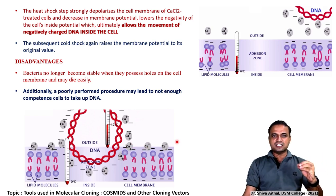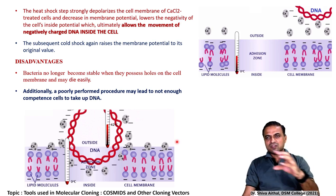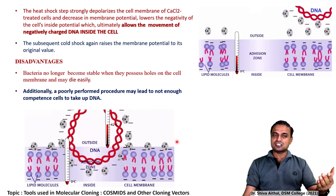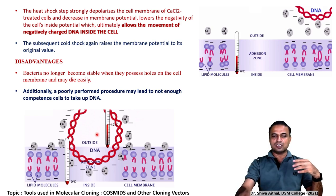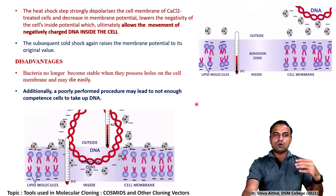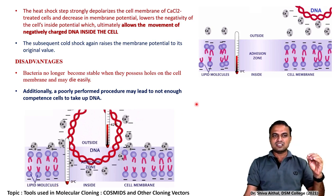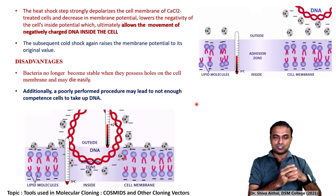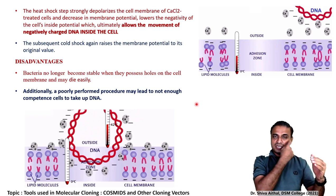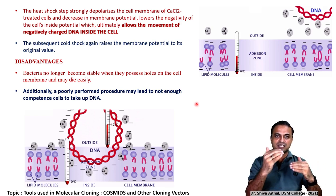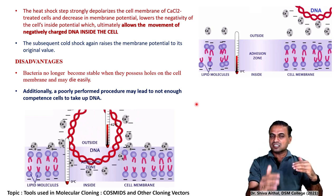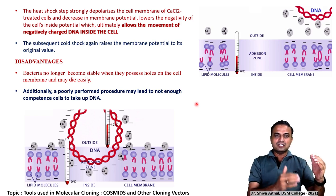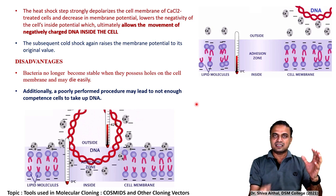Once the DNA is attached and movement starts, there is a subsequent cold shock — suddenly the temperature is brought down to 0 degrees centigrade. When the temperature is brought to 0 degrees centigrade, this raises the membrane potential. Earlier with the heat shock, temperature was raised, causing a lowering of the negativity of the cell's inside — a decrease in the membrane potential. Now when the temperature is brought down, there is an increase in membrane potential, and due to this, suddenly the DNA is sucked inside and brought into the cell.